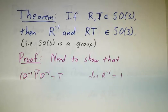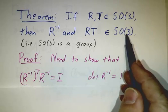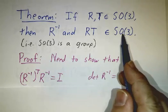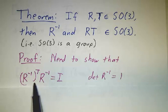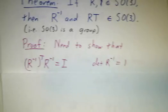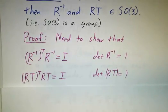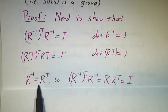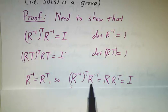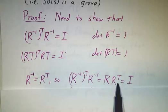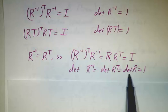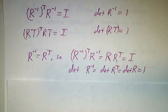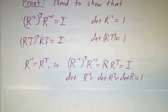To be in SO(3), a matrix must be orthogonal — meaning its transpose times itself equals the identity — and have determinant plus one. For R inverse: since R is orthogonal, R inverse equals R transpose. So (R inverse) transpose times R inverse equals R times R transpose, which is the identity. The determinant of R inverse equals the determinant of R transpose, which equals the determinant of R, which is one. So the inverse of an element of SO(3) is in SO(3).